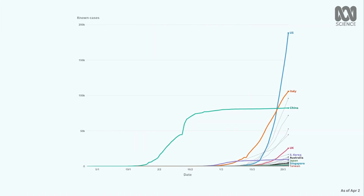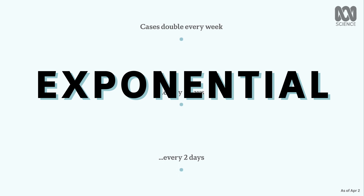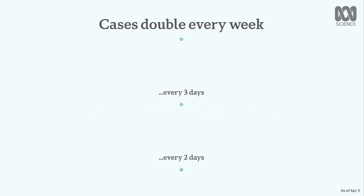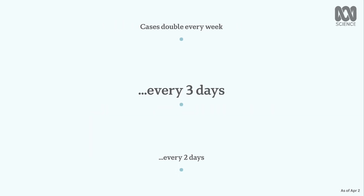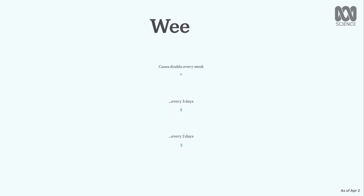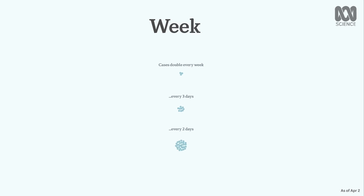One concept that's important to understand is exponential growth, which is how viruses tend to spread. What might seem like a small difference can actually have enormous impacts on how many people are infected overall. A good way to think about exponential spread is to look at how long it takes for the number of cases in a country to double. Initially, the differences might look small, but as time passes, they increase dramatically.